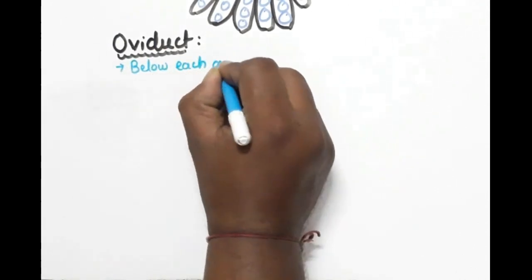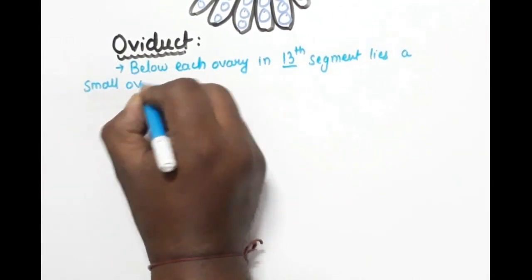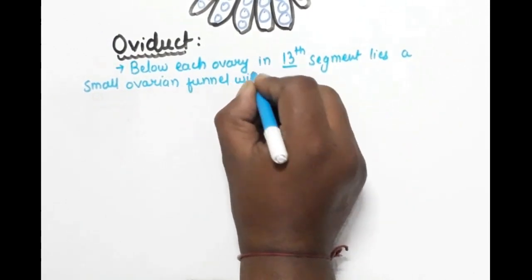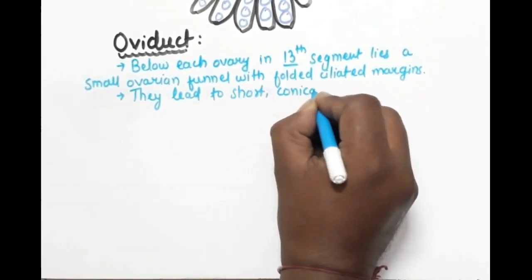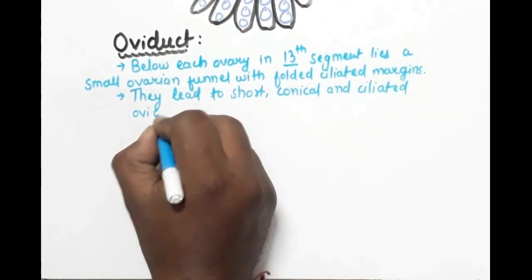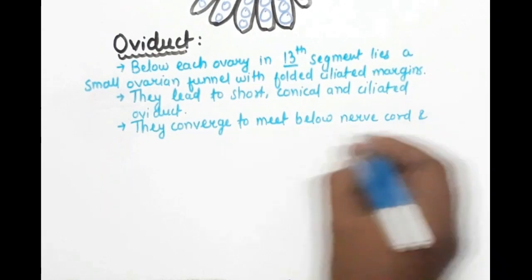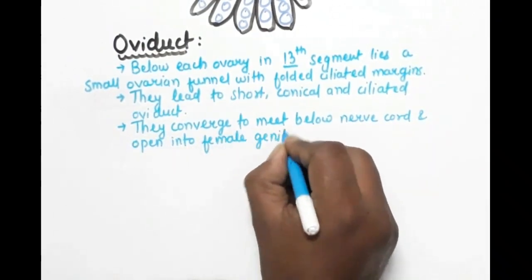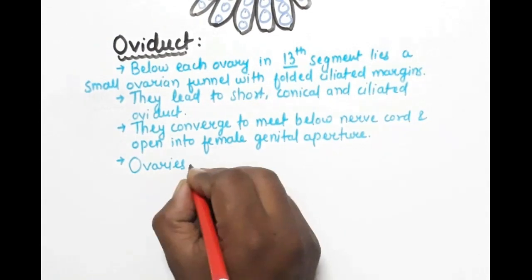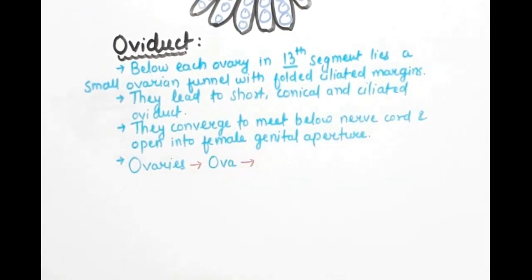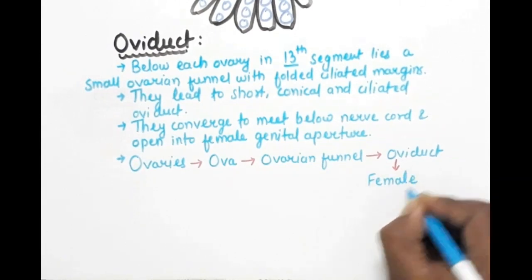Below each ovary in the thirteenth segment lies a small ovarian funnel. The ovarian funnel opens below the nerve cord and opens into female genital aperture. So I can draw the whole path: the ovary produces ova, there will be different stages, so the developed ova will reach the ovarian funnel and finally from the ovarian funnel it will get out of the female genital pore.